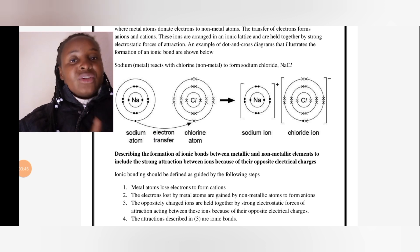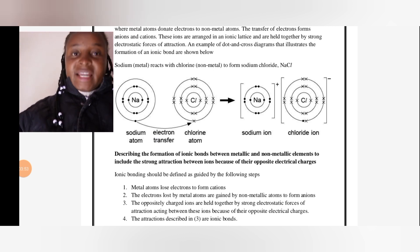Sodium donates that one electron; it goes to chlorine. Your sodium ion now has a plus charge because it lost one electron. Chlorine has a negative ion because it has gained one electron.